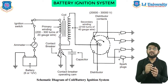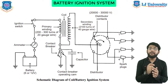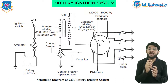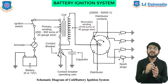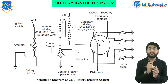Because of the greater number of turns — 21,000 turns in the secondary — the voltage goes up to 20,000 to 30,000 volts. This high voltage current is brought to the center of the distributor rotor. The distributor rotor rotates and supplies this high voltage current to the proper spark plug depending upon the engine firing order. When the high voltage current jumps the spark plug gap, it produces a spark, the charge inside the engine is ignited, combustion starts, and power is produced.